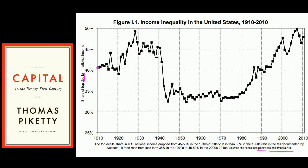As we go through the Great Depression, and especially after World War II, this drops down into the low 30%. Then from the 1980s to the present, it has crept back up to the high 40% range. So the top decile — the top 10% of earners — are making close to half of the national income.